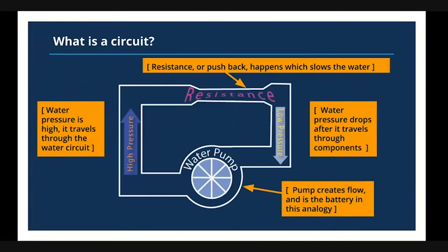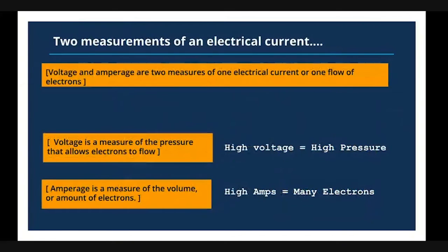High voltage and high amperage systems are inherently dangerous, but what we're going to be creating today are emulations of low voltage and low amperage systems that you can work with safely at home, should you choose to get the components to build the circuit offline. Voltage and amperage are the two measurements that refer to electrical current and the flow of electrons. Voltage refers to the measure of pressure that allows the flow of electrons, and amperage is a measure of the volume or amount of electrons. So high voltage is high pressure, and high amperage means many electrons.